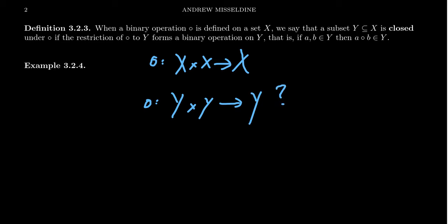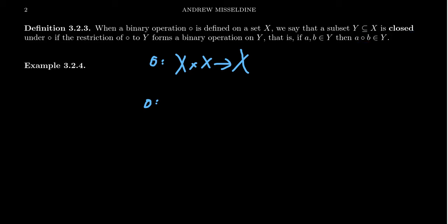We know that it'll always go to X, but can we restrict it just to Y? And if we can, we say that the subset is closed with respect to the operation. That is, the resultant of combining any two elements from Y gives you something in Y. And this is a phenomenon we see a lot.